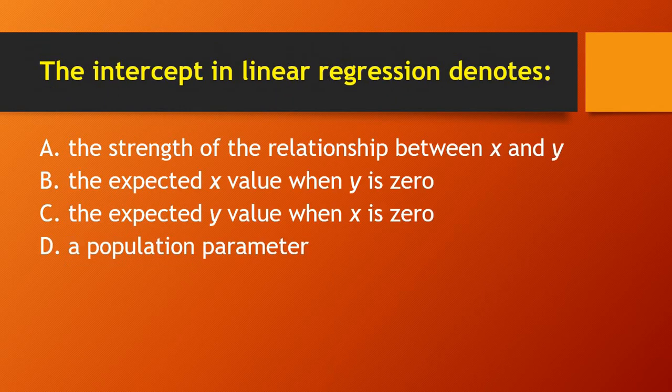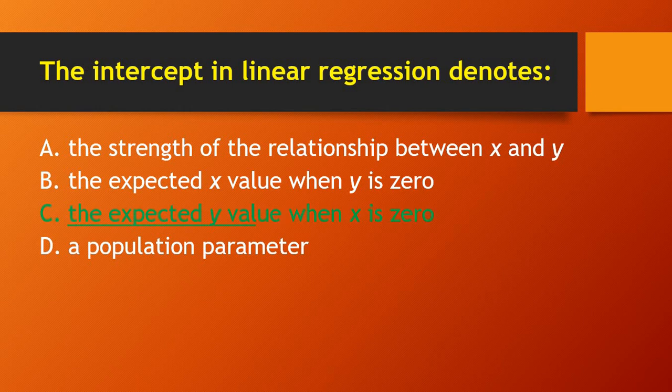Next question: the intercept in linear regression denotes — (a) the strength of the relationship between x and y, (b) the expected x value when y is zero, (c) the expected y value when x is zero, or (d) a population parameter? The right answer is: the expected y value when x is zero.